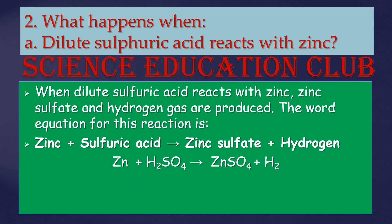What happens when dilute sulfuric acid reacts with zinc? When dilute sulfuric acid reacts with zinc, zinc sulfate and hydrogen gas are produced. The word equation is: zinc plus sulfuric acid gives zinc sulfate plus hydrogen. The chemical equation is: Zn + H₂SO₄ → ZnSO₄ + H₂.